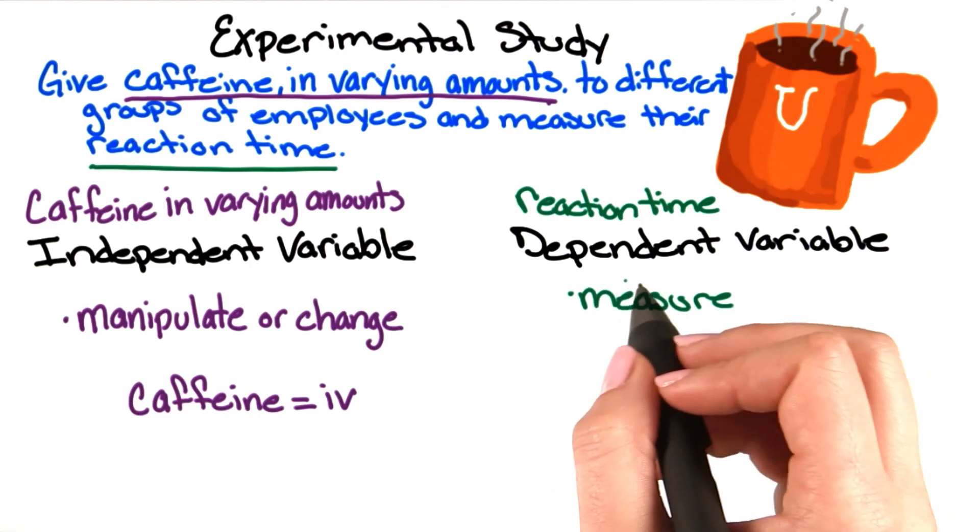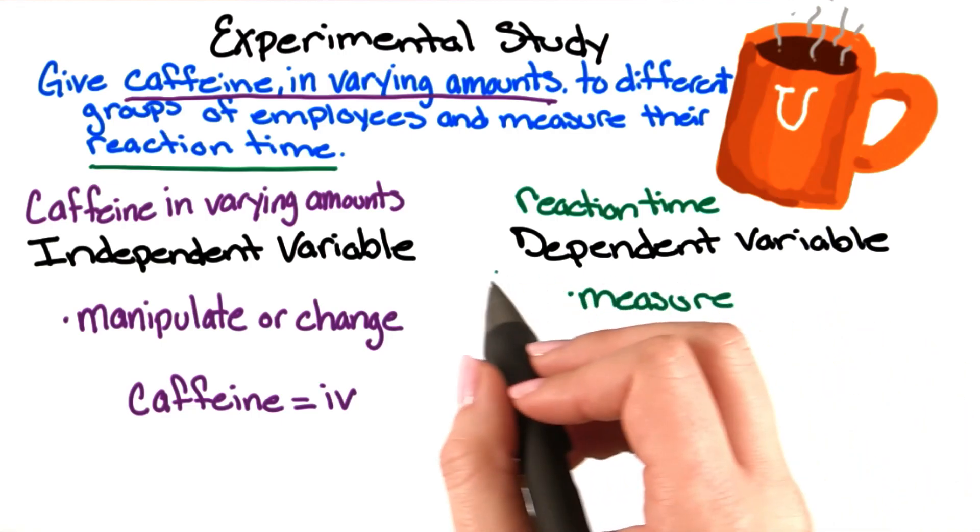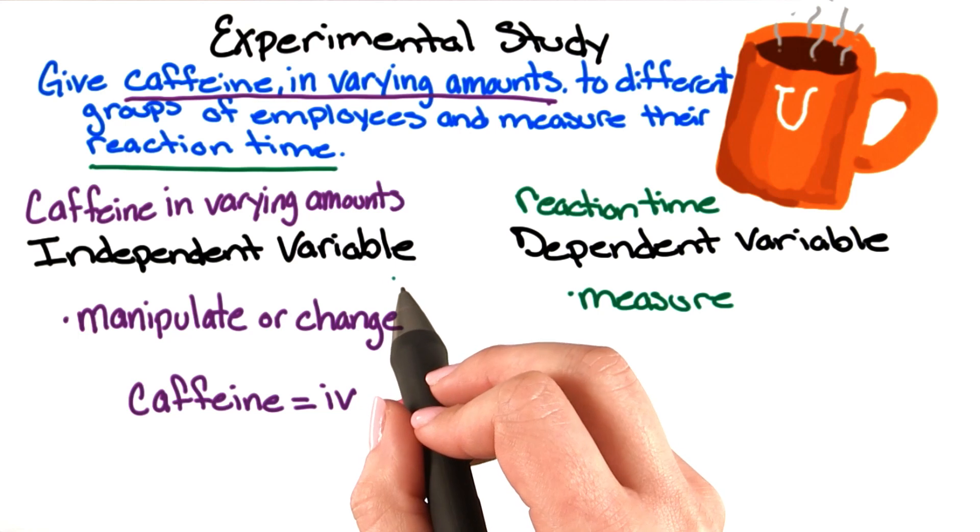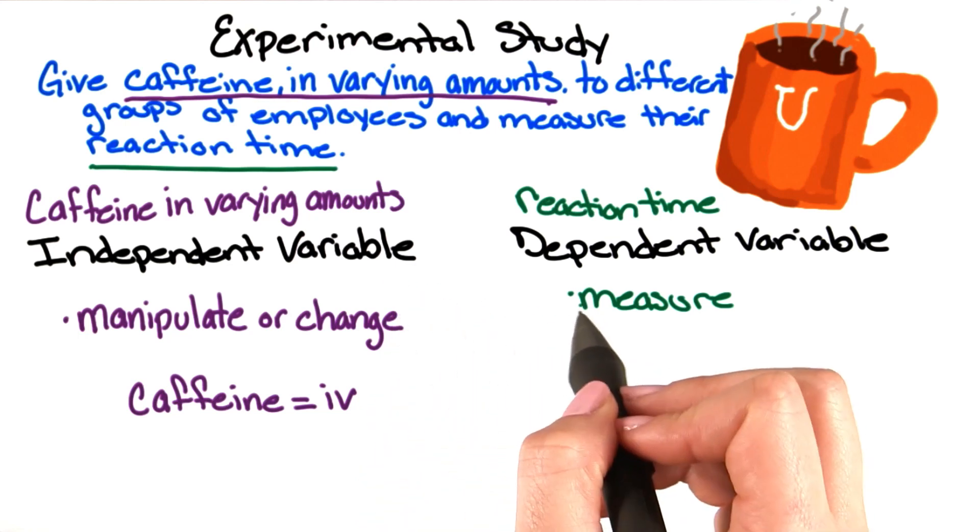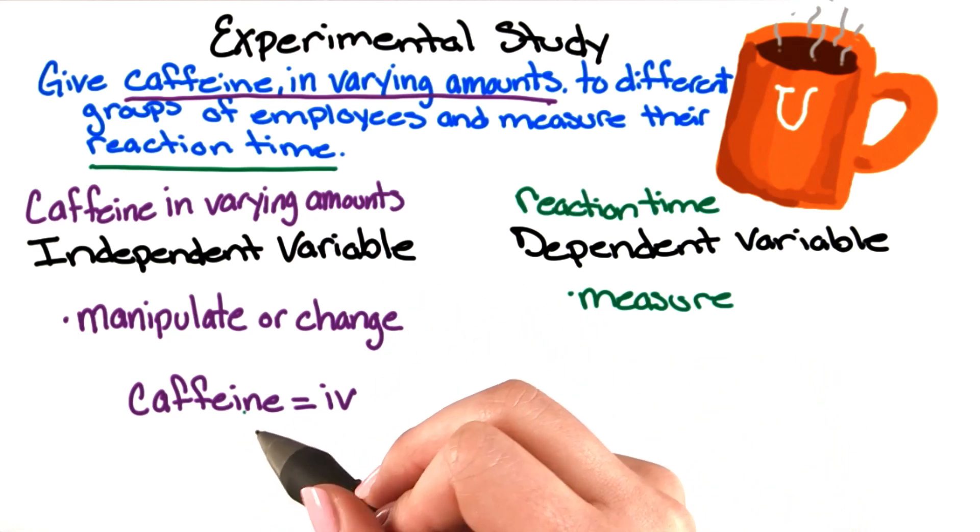We need to measure how the dependent variable responds or changes to the independent variable. How does reaction time change when we manipulate caffeine?